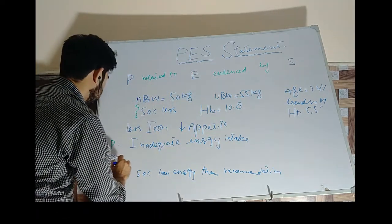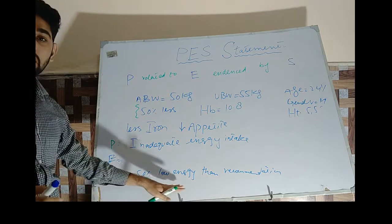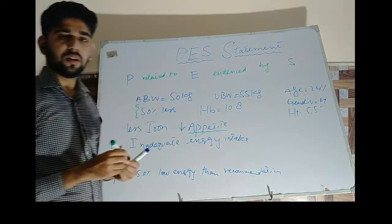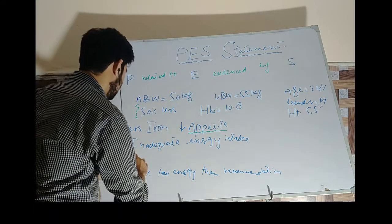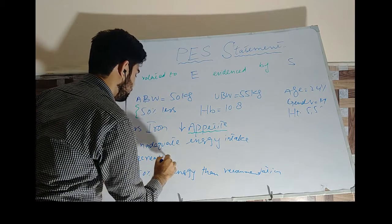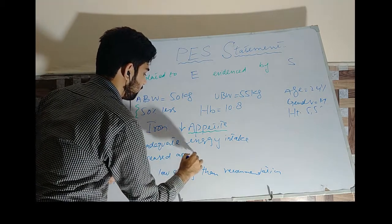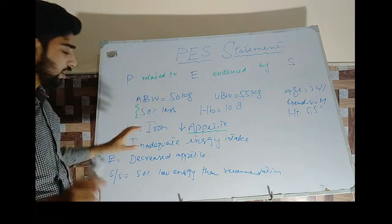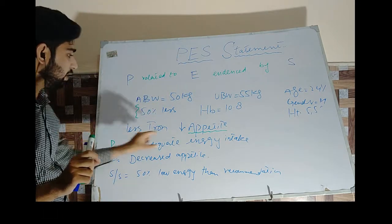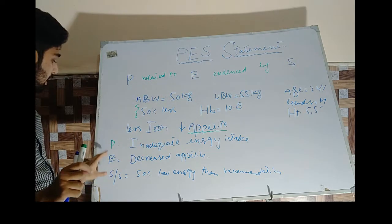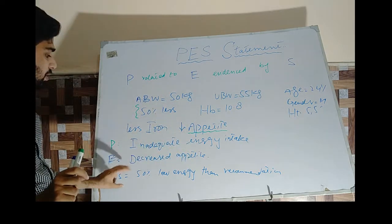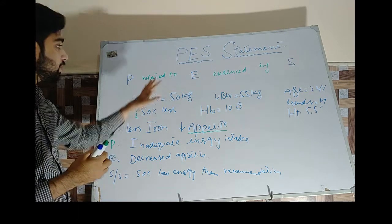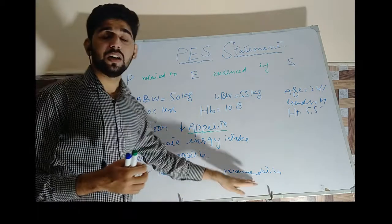What is the etiology — what is the cause? Why is the person taking low energy than the recommendation? They have decreased appetite. So what is the cause? Decreased appetite. So we have found the problem — inadequate energy intake — the etiology — decreased appetite — and the signs and symptoms, which is how we came to know about the problem: 50% low energy than the recommendation.